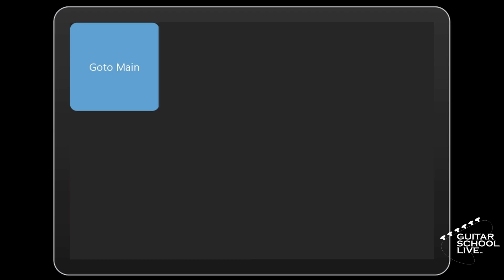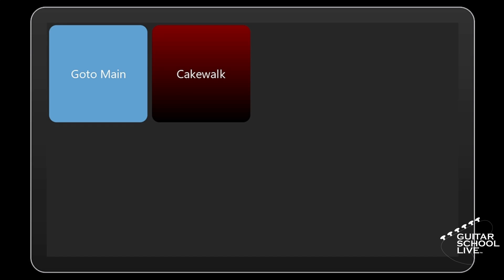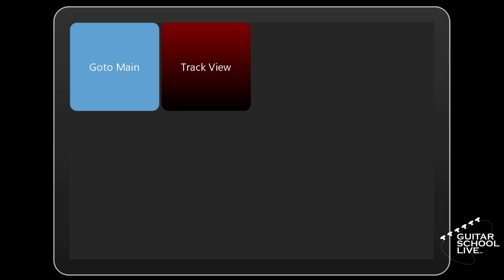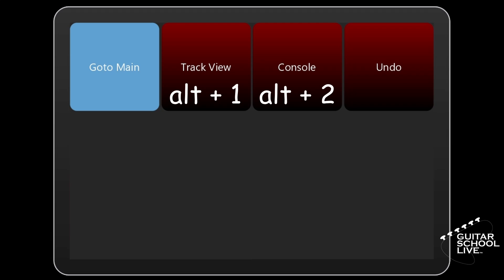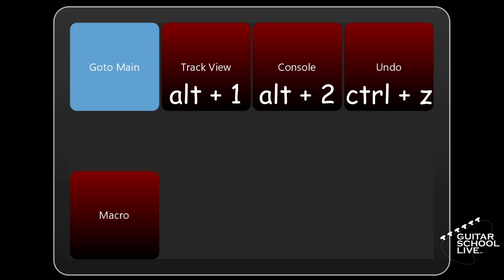We'll begin by setting up a main page button to launch Cakewalk. Then we'll set up a page and configure buttons to launch keyboard shortcuts. The first button will activate the track view using keyboard shortcut ALT plus 1. The second button will activate the console view using keyboard shortcut ALT plus 2. The third button will activate the undo function using keyboard shortcut CTRL plus Z. And the fourth button will activate a series of actions called macros.